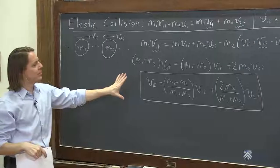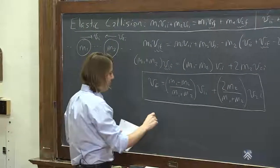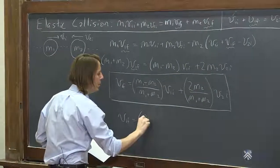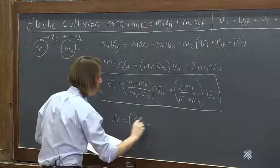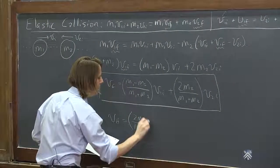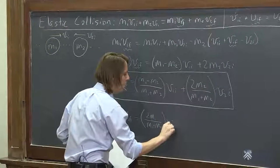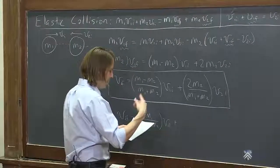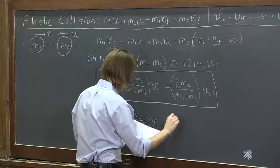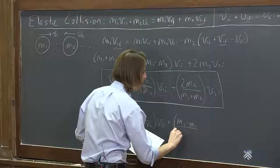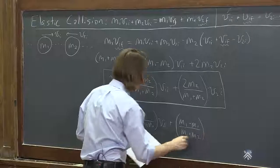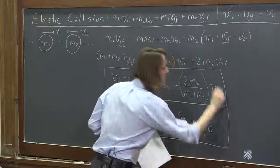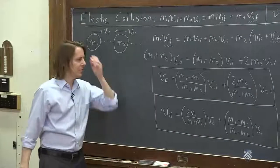We could do the exact same algebra to get V2f, almost identical steps. And we would find, we get an almost identical solution. We would get the 2M1 over M1 plus M2 on this side. And that would be times V1i plus, and then we would get the difference over the sum, M2 minus M1 over M1 plus M2, and this would be the V2i part, V2 initial. That's the other one we could get with essentially the same algebra.